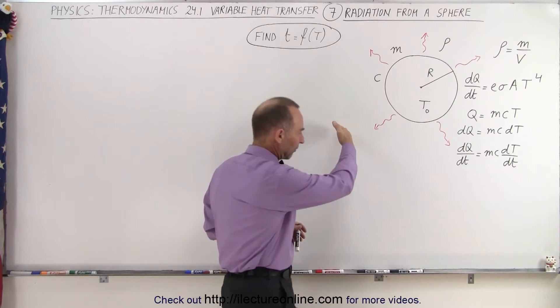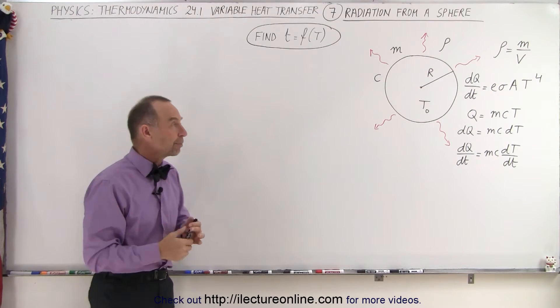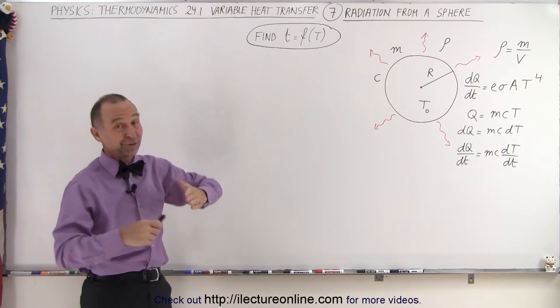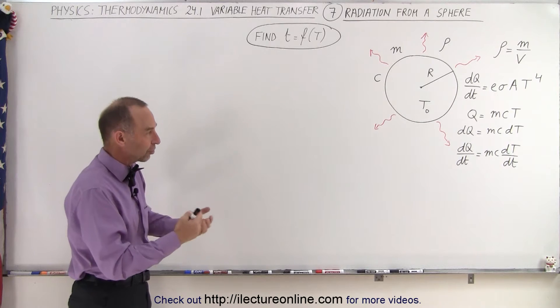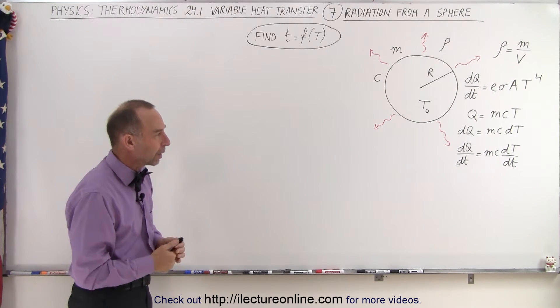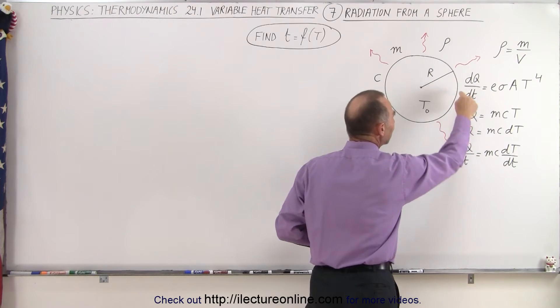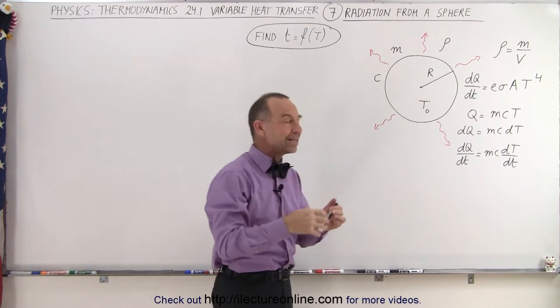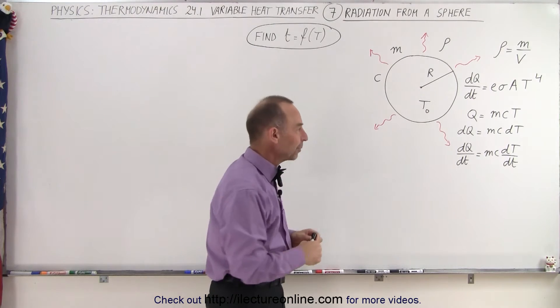Exponentially it's kind of going to have a curve like this. And so coming up with an equation for the time as a function of temperature, that's going to take a little bit of integration. So let's go ahead and show you how to do that. First of all what we're going to do is we're going to set these two dQ/dTs equal to one another because the amount of heat that the object loses equals the amount of heat that's being radiated out from the object.